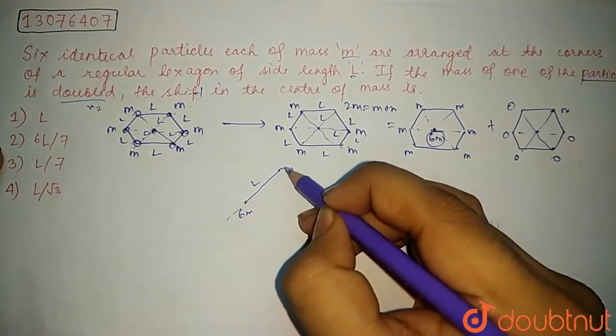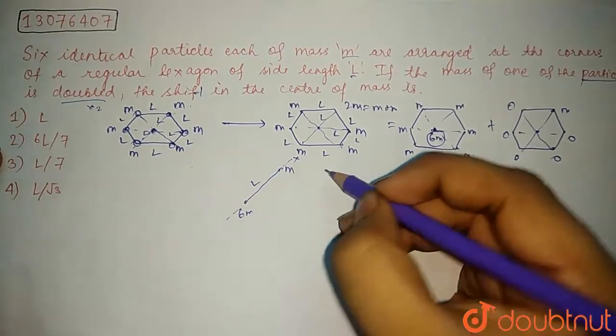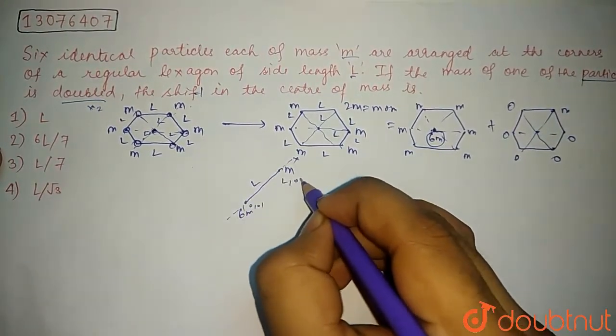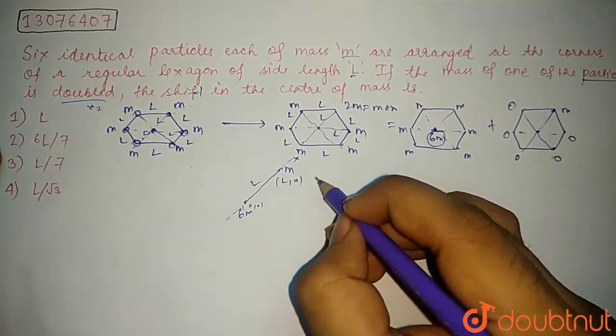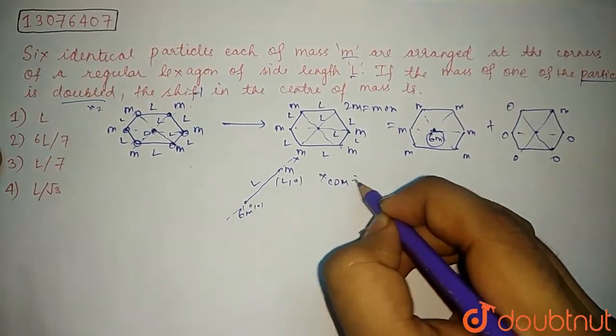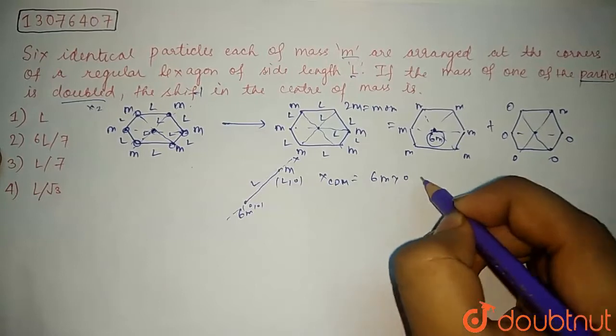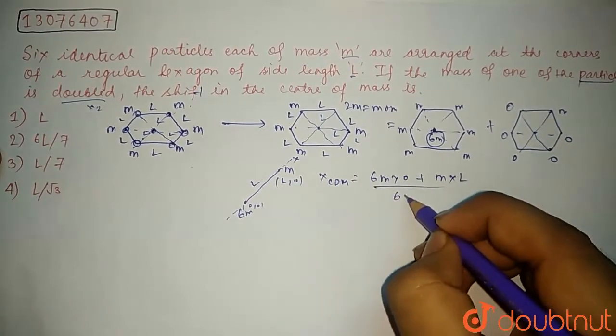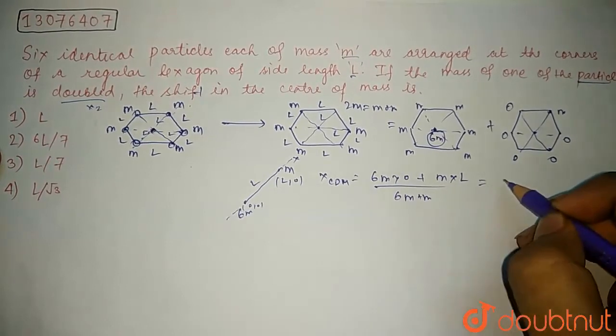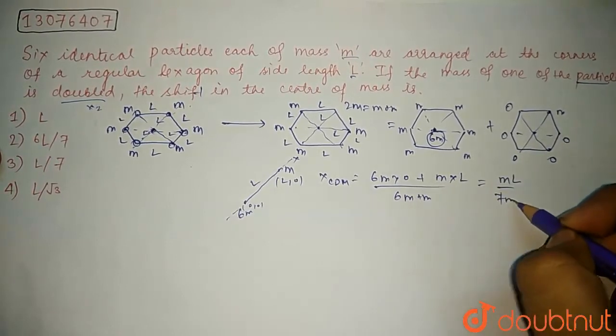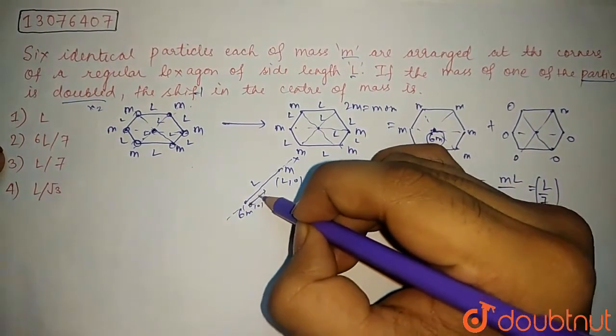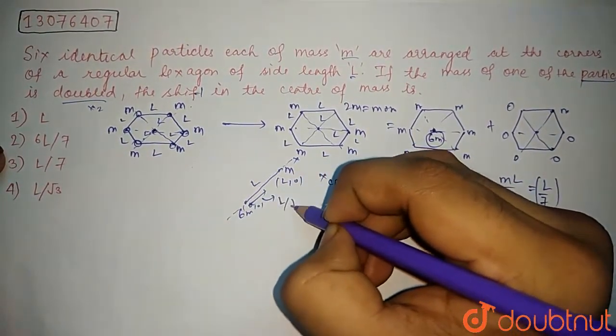We can say that this is the x axis. So this is 0,0 and this is the center of mass. This is equal to 6M into 0 plus M times L, divided by 6M plus M, which is equal to M into L divided by 7M, which is equal to L by 7. This is the center of mass, the distance of L by 7.